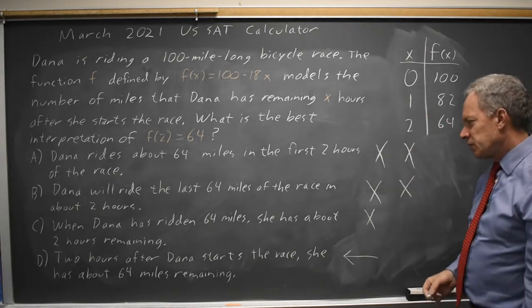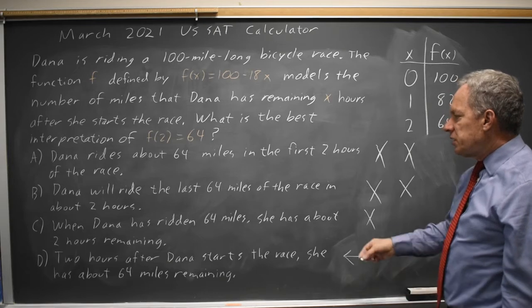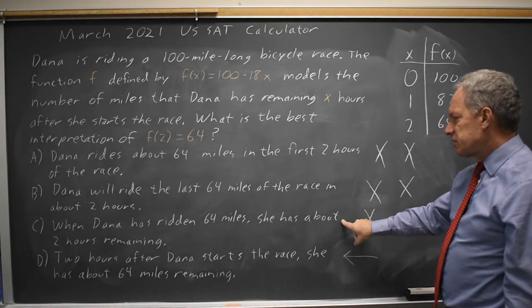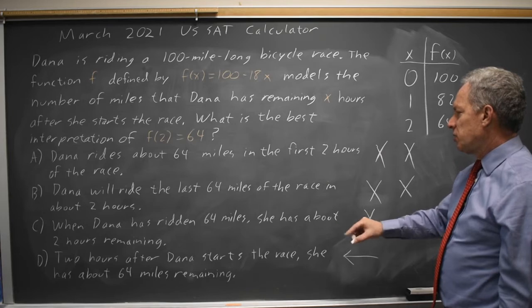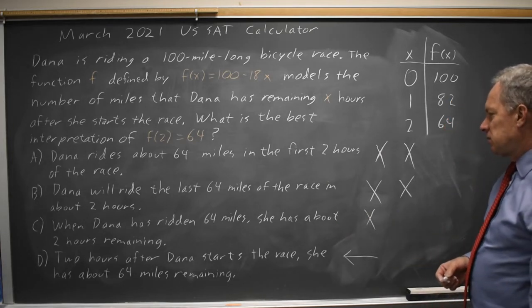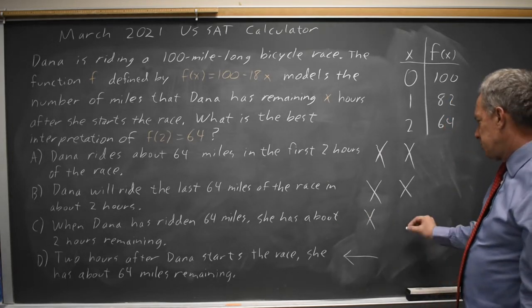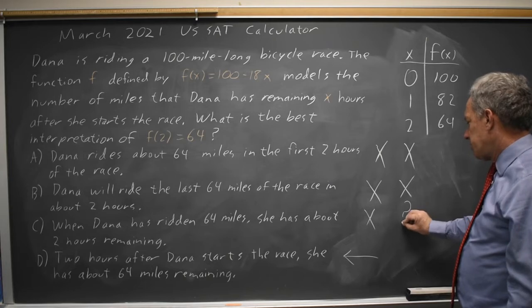Choice C, when Dana has ridden 64 miles, she has about 2 hours remaining. That would suggest, that would actually be correct. So it could be the correct answer.